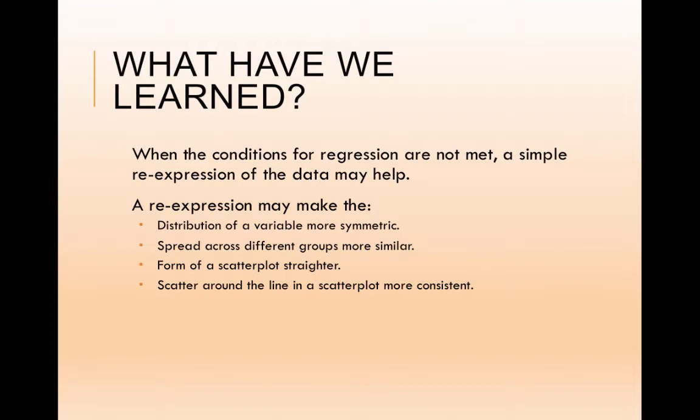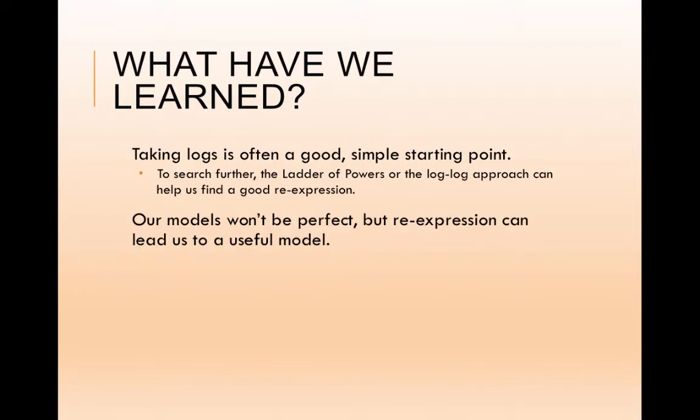And then finally, what have we learned? When the conditions for regression are not met, a simple re-expression can help. A re-expression helps make the distribution more symmetric, spread similar across groups, makes the data straighter, which is what we're really looking for, and it makes the scatter more consistent, so lessening our variance. And finally, we also learned that taking logs is often a good starting point. To search further the ladder of powers with a log-log approach can help us find a good re-expression. But starting off with a logarithm is often a good place to start and then seeing where we go from there. Our models won't be perfect. That's okay. But it is helpful to re-express the data so that we can use a linear model.